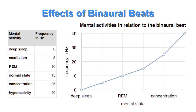For example, if the difference of the two frequencies is 10 hertz, the brainwaves will also approach 10 hertz. As you can tell from this graphic, different brainwave frequencies represent different mental states. For example, while in a hyperactive state, your brainwaves pulse at a frequency of about 40 hertz, and while dreaming they pulse at about 10 hertz.